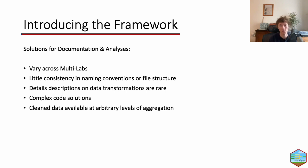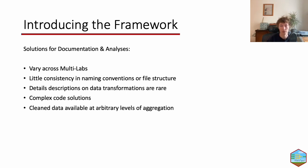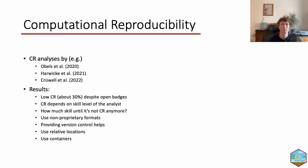The variation across multi-labs is quite large. There is little consistency in naming conventions; sometimes the verbal descriptions and other provided details on the data transformations are sparse or even inconsistent. Some code solutions are really complex, though interesting. Sometimes we do not find cleaned datasets at different levels of aggregation, which results in a lot of detective work for anyone who wants to use that data and makes computational reproducibility much harder to achieve. By computational reproducibility, we mean you can run the original code on the original data and achieve the same results as reported.